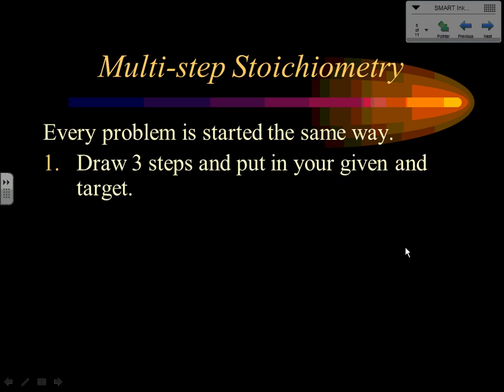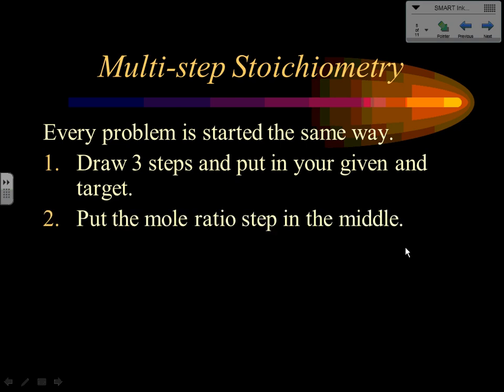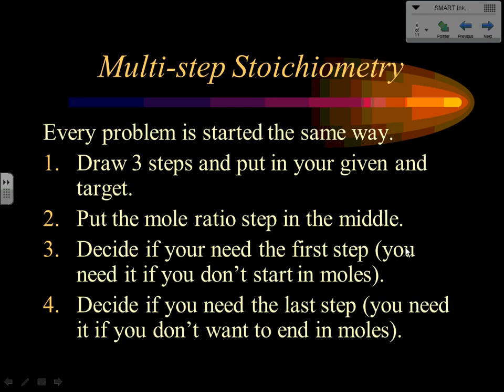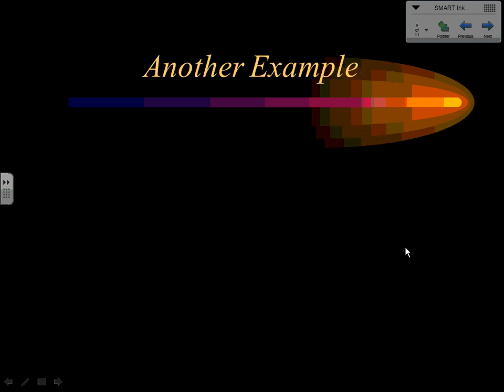Here's the technique summary: draw three steps, put your given and target in. Go to the mole ratio step in the middle — put the starting substance on the bottom, the ending substance on top, and add moles to both. Look at the balanced equation for the coefficients. Then decide if you need step one: skip it if you're already starting in moles. Decide if you need step three: skip it if the answer is already in moles.